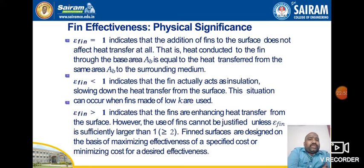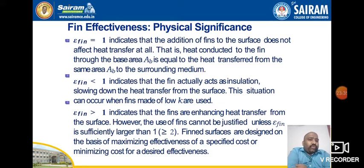Physical significance: if effectiveness = 1, it indicates that adding a fin does not affect heat transfer at all — heat conducted through the base area equals heat transferred from the same area AB to the surrounding medium. If effectiveness < 1, the fin actually acts as insulation, slowing down heat transfer — this occurs when fins made of low thermal conductivity material are used. If effectiveness > 1, the fin enhances heat transfer from the surface. However, fins cannot be justified unless effectiveness is sufficiently greater than 1, typically greater than 2.